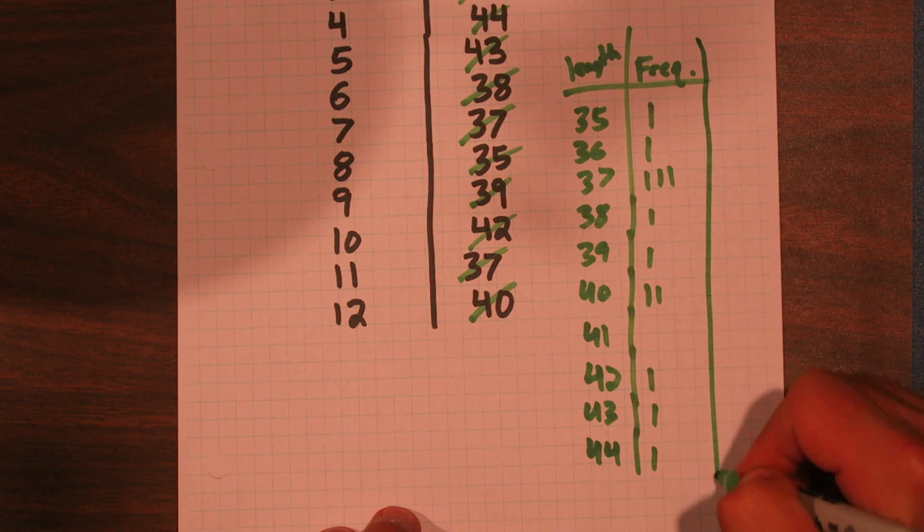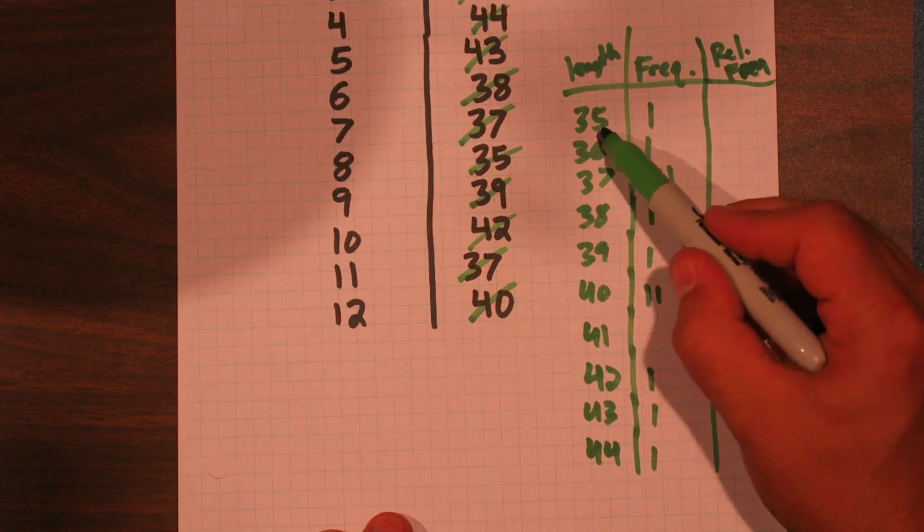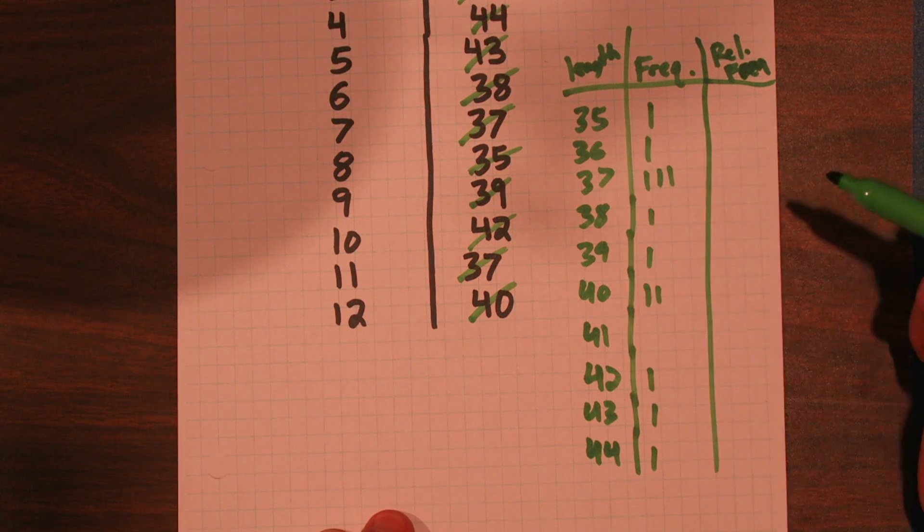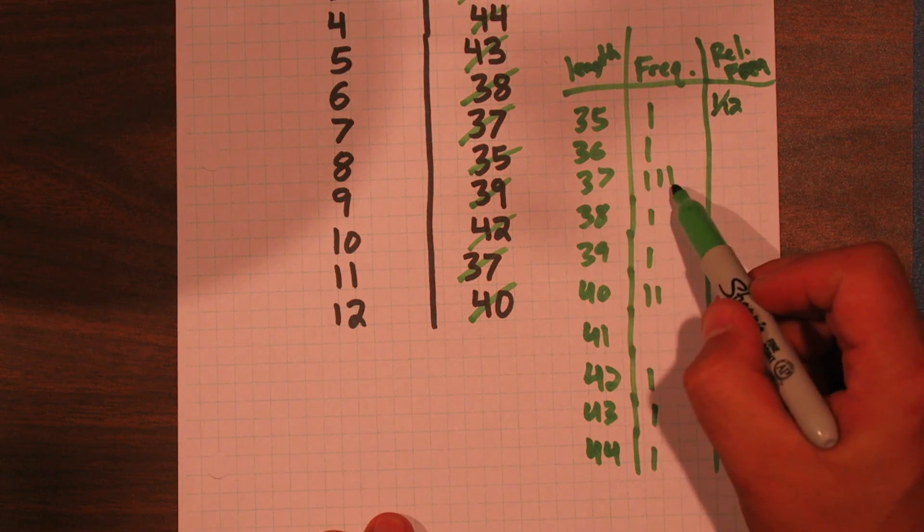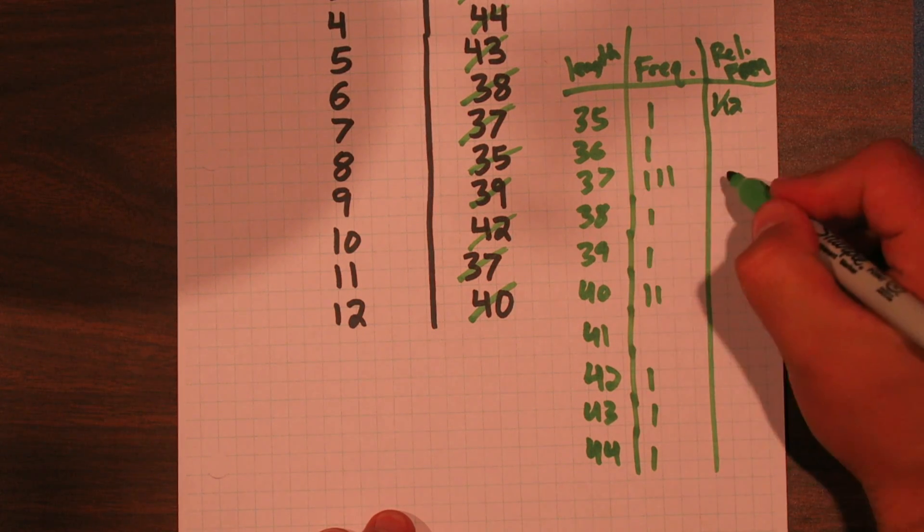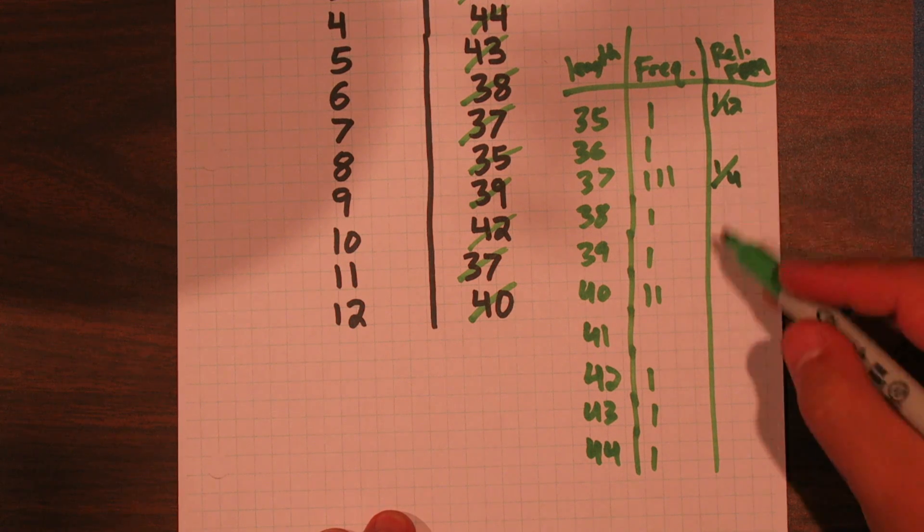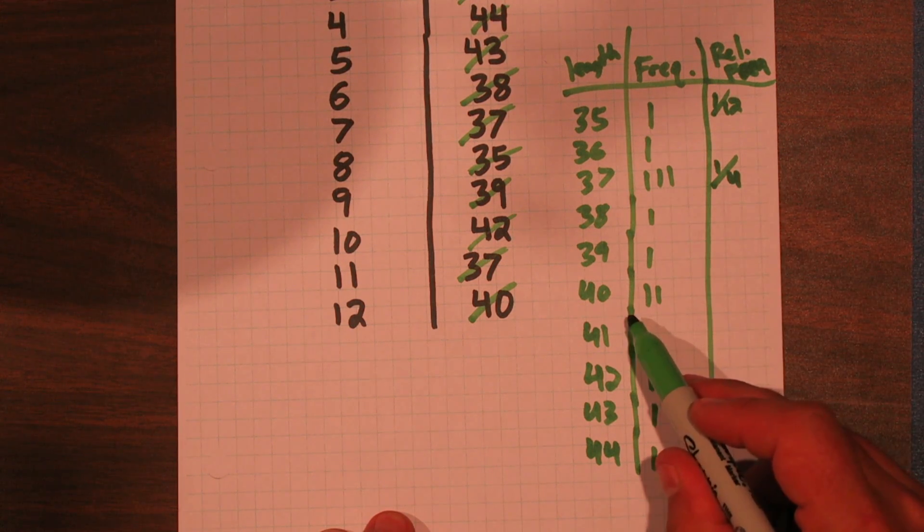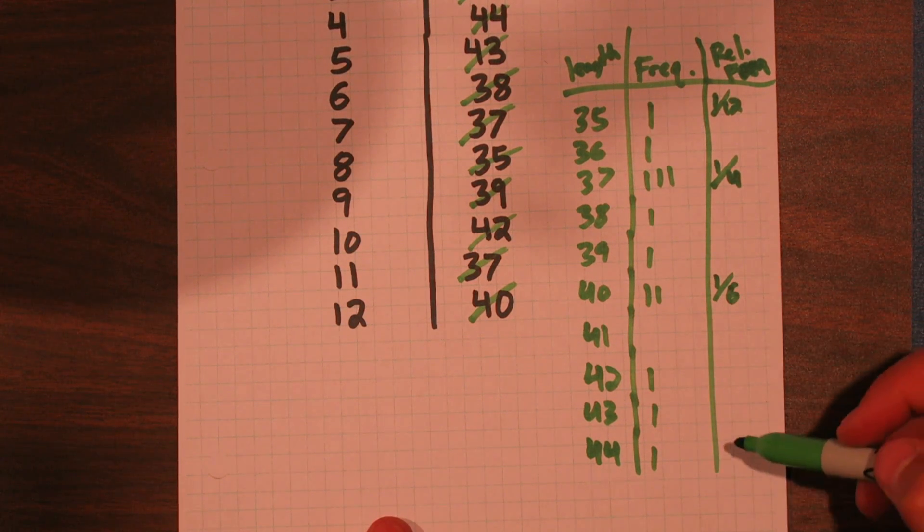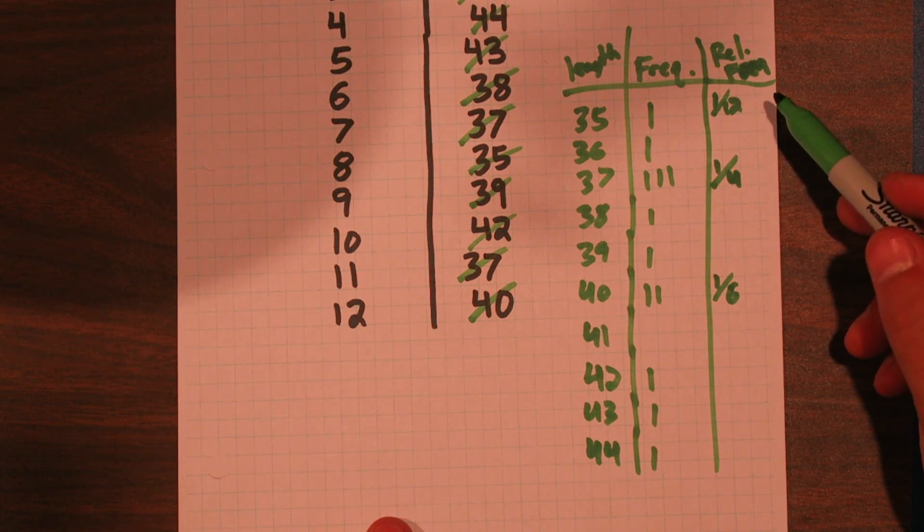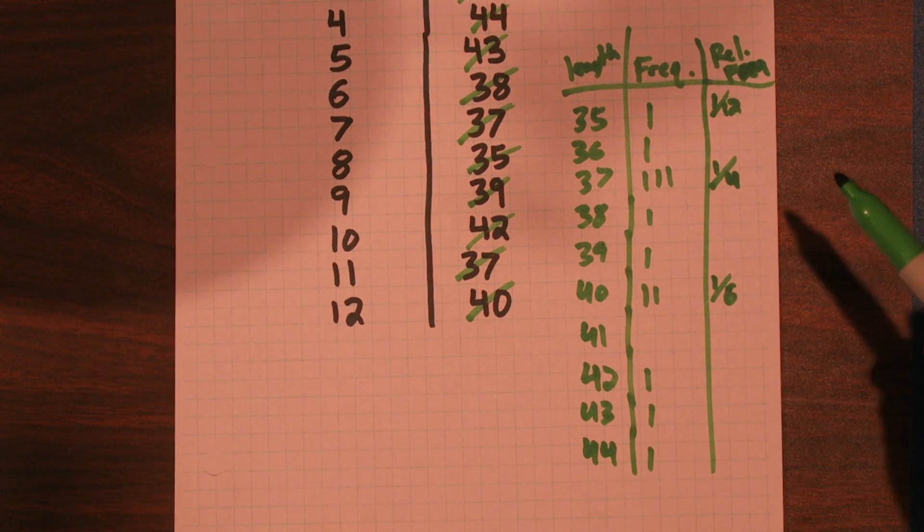Now let's talk about relative frequency. Relative to the 12 acorns we collected, how many were 35 millimeters in length? It turns out 1/12th of them. How many of them were 37? Well 3/12ths, so 1/4 of them once we reduce it. How many were 40? Well 2 over 12 would be 1/6 of them. So the most frequent acorn length observed was 37. A quarter of our acorns observed were 37.